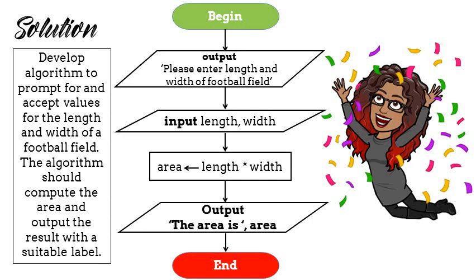Now, once that happens, the user will then input the length and width and then the calculation or process occurs. The area is calculated with length multiplied by width. Now the output that we get would be the area of the field. And we said that we want to show a suitable label.